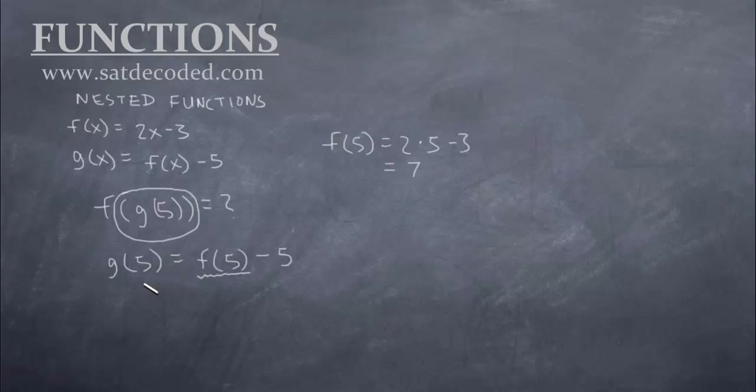So now we can go back to our g(5), which equals 7 minus 5. f(5) we found out was 7, so all I did was replace it down here, which 7 minus 5 is 2. So now we know g(5) is 2.